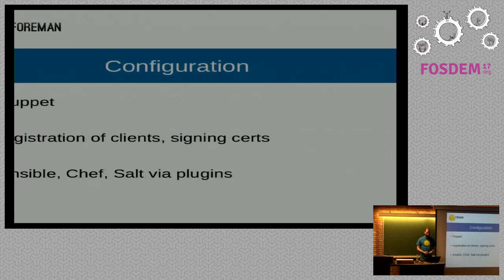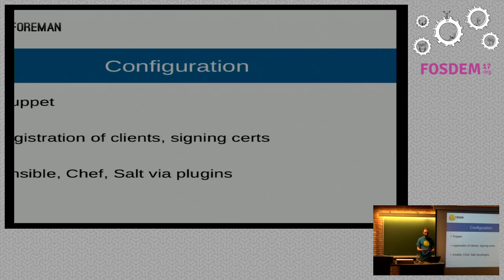For configuration, Puppet is kind of a first-class citizen for Foreman because Foreman started as a UI for Puppet, but that was a long time ago and Foreman has evolved a lot since then. If you don't like Puppet, you can also use Ansible, Chef, or Salt. It's entirely up to you.